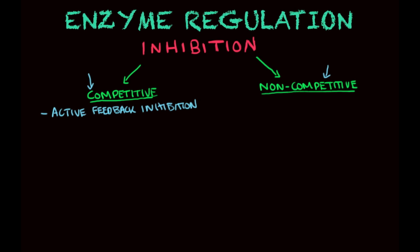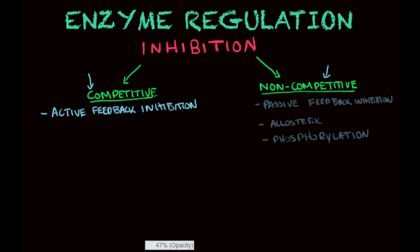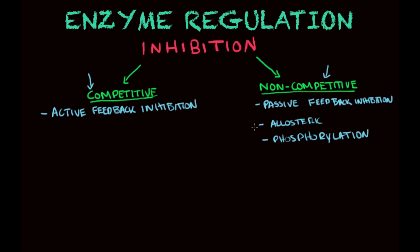For non-competitive inhibition, there is no competition for the active site. Instead, other parts of the enzyme influence whether it's switched on or off. One type is passive feedback inhibition — the opposite of active feedback inhibition — where the product of a reaction binds to an allosteric site on the enzyme and switches it off. The second type is allosteric regulation, and the third and final type is phosphorylation, both forms of non-competitive inhibition.